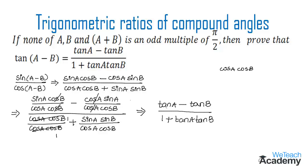So we get tan A minus tan B divided by 1 plus tan A tan B, which is the value on the RHS side. Hence we have proved the formula of tan(A minus B), which is equal to tan A minus tan B divided by 1 plus tan A tan B.